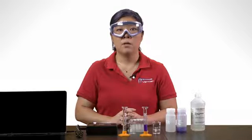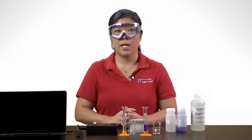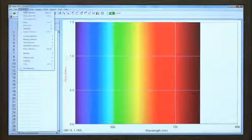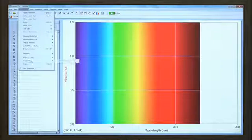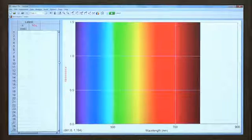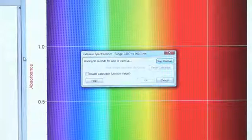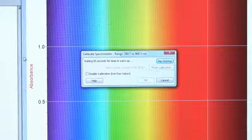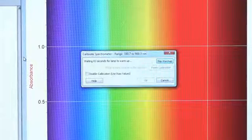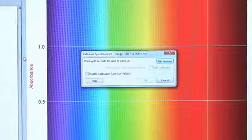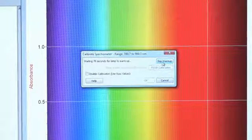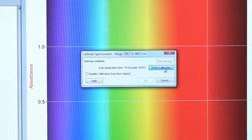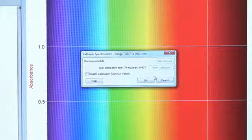And in LoggerPro, open the experiment menu and choose calibrate and then choose spectrometer. You will see a small dialog box and a 90 second timer will start. This spectrometer has been already connected for the 90 seconds so I will skip the warm up. And then I will tap on Finish Calibration and then click on OK to complete.